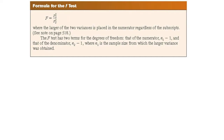Bear in mind that the F-test is different from the chi-square test, which compares the sample variance to the population variance. In the F-test, we are not comparing to the population variance. If two independent samples are selected from two normally distributed populations in which the variances are equal, and if variance 1 and variance 2 are compared, the sampling distribution of the variances is called the F-distribution.